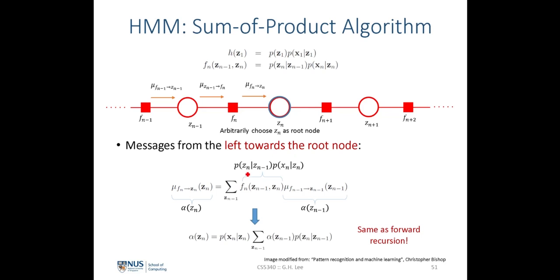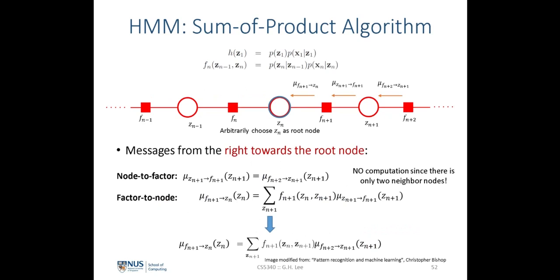Plugging in the factor definitions, we see that f_n equals the emission probability multiplied by the transition probability. The term mu of f_{n-1} can be taken as alpha(z_{n-1}), and mu of f_n to z_n can be taken as alpha(z_n). As a result, the message passing from left to right in the hidden Markov model's linear chain is equivalent to the alpha recursion — the forward recursion — derived earlier from the Bayesian network.